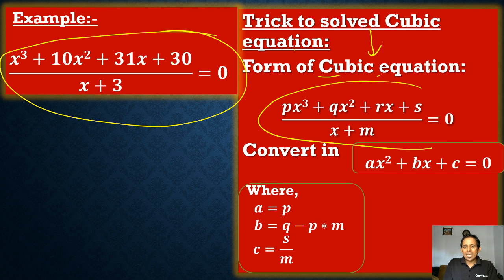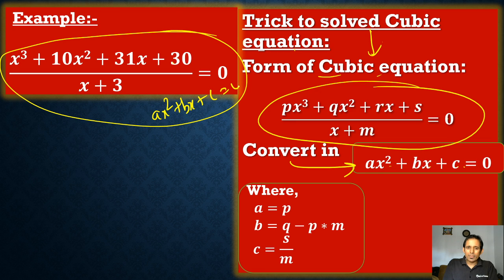Form of cubic is what? px³ + qx² + rx + s divided by x + m equals 0. Convert into ax² + bx + c equals 0. This is the form. So we have three variables a, b, c. How to find out a, b and c?